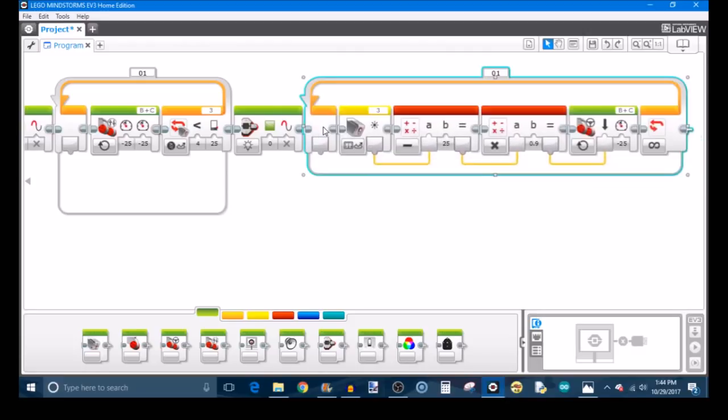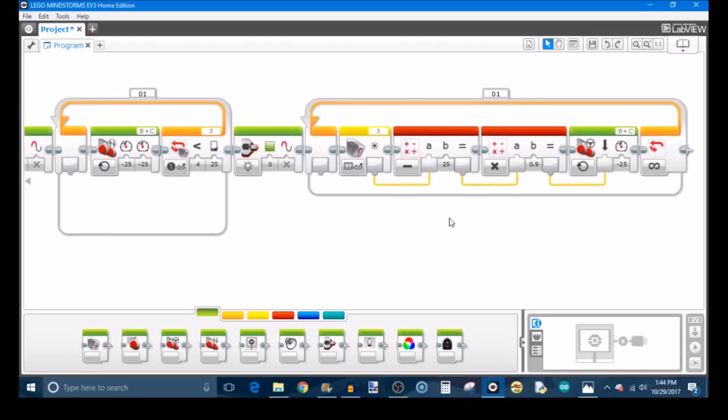I'm not going to go over how to program one in this video because I already have a separate video for that, and you can check that out if you'd like to learn how. Anyway, this is where you insert your desired line follower, because at this point in the program the robot has already acquired the line and your robot will then line follow and move on with the rest of its program.